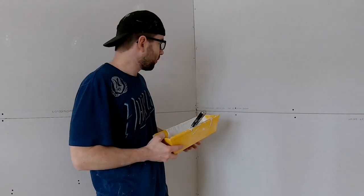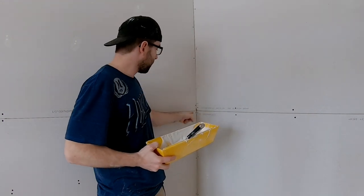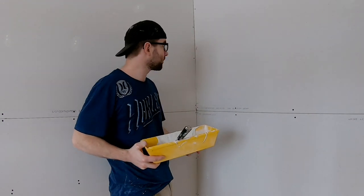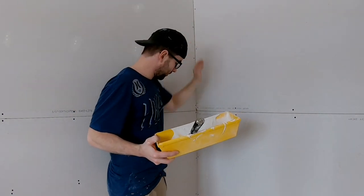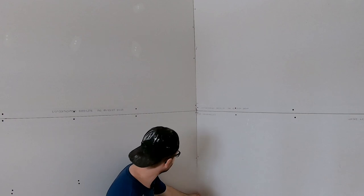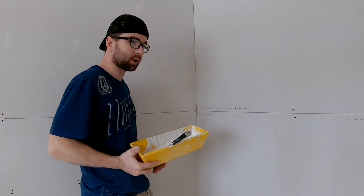Okay, in this video I'm going to show you how to tape an inside drywall corner with paper tape. I'm going to tape just from about here to about here. I think that's about all the camera will show.